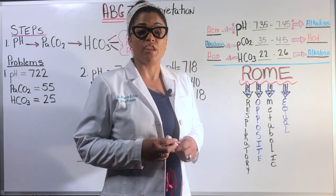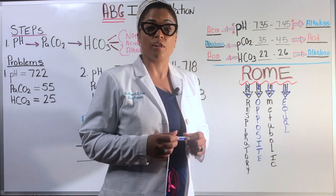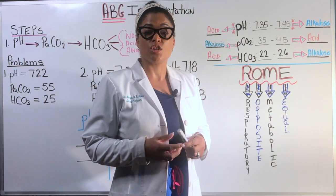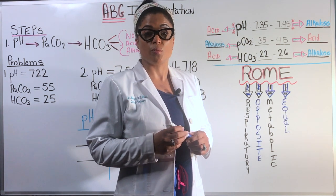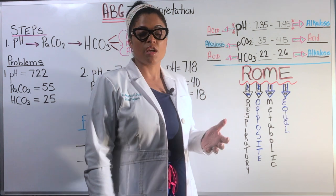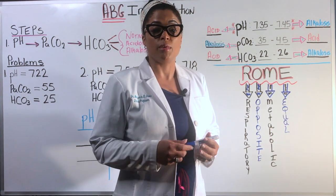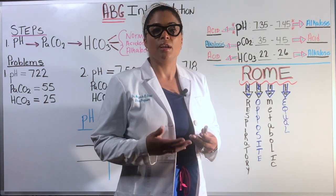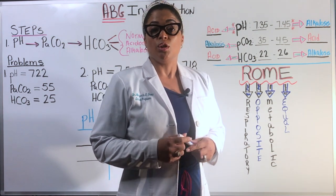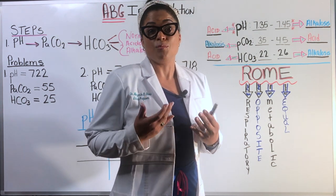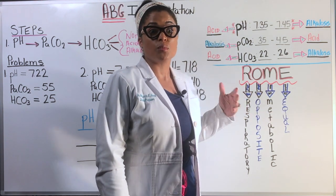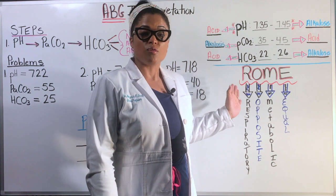Today we're going to expand on the arterial blood gas video that I previously posted. In this case, instead of using the tic-tac-toe method for ABG interpretation, we're going to use the ROME method. Whichever method works for you when you get an ABG result for your patient doesn't matter. What matters is that you get the correct results. You can use tic-tac-toe, which is the more fun way to do it, or you can use ROME. This one is pretty straightforward.